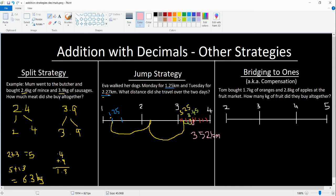That's a jump strategy. Let's have a look now at bridging. Bridging is very similar to jump strategy. We always start with our biggest number here, so we've got 1.7 kilos. Tom bought 1.7 kilos of oranges and 2.8 kilos of apples at the fruit market. How many kilos of fruit did he buy all together? We're going to find 2.8, so that's going to be 2.5. Here's going to be our 2.8. We're going to start here.